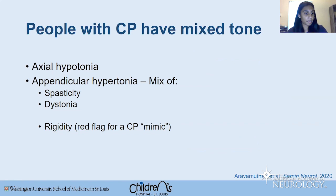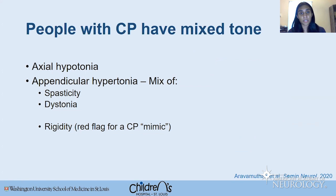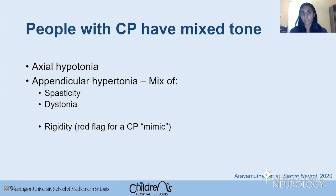People with CP have mixed tone — often axial hypotonia combined with appendicular hypertonia, usually a mix of spasticity and dystonia. Data from Darcy Phelan's group in Toronto shows up to 80% of people with spasticity have some degree of dystonia. Rigidity is extremely rare in true CP and is a red flag for a CP mimic, typically an infantile onset neurotransmitter disorder. Identifying rigidity early should automatically prompt investigation and potential early treatment for a CP mimic.